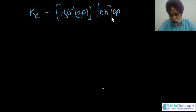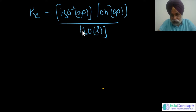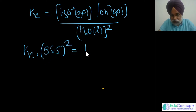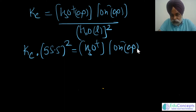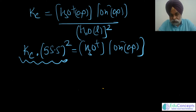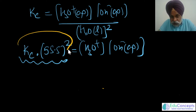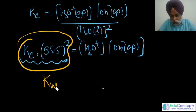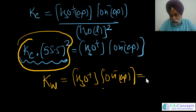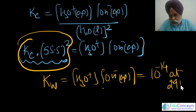Now how do we write the equilibrium constant? We write Kc = [H₃O⁺(aq)][OH⁻(aq)] / [H₂O(l)]². Multiplying both sides by 55.5² gives [H₃O⁺][OH⁻]. This equilibrium constant multiplied by the constant concentration of pure liquid water gives us a new constant — the ionic product of water, Kw = [H₃O⁺][OH⁻]. This value has a magnitude of 10⁻¹⁴ at 298 K, found experimentally.